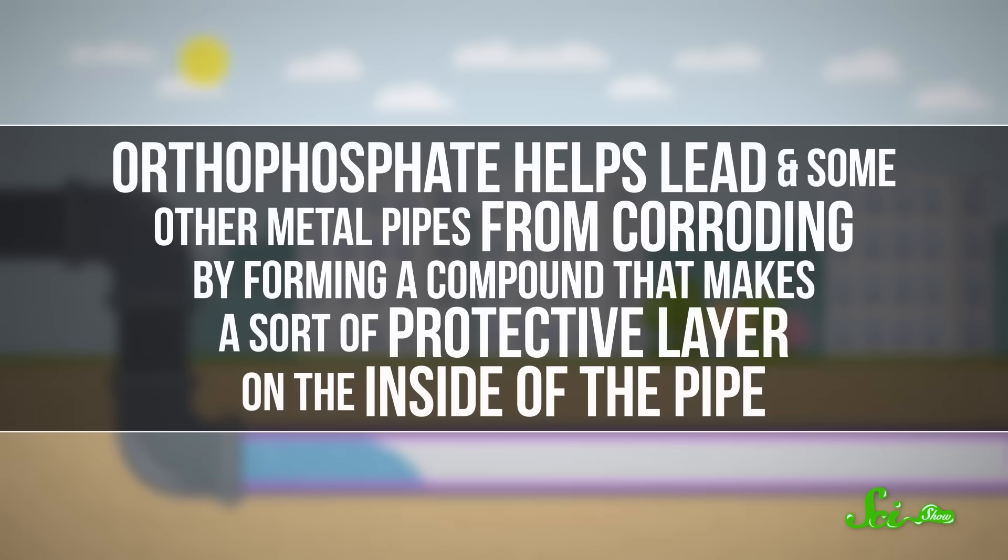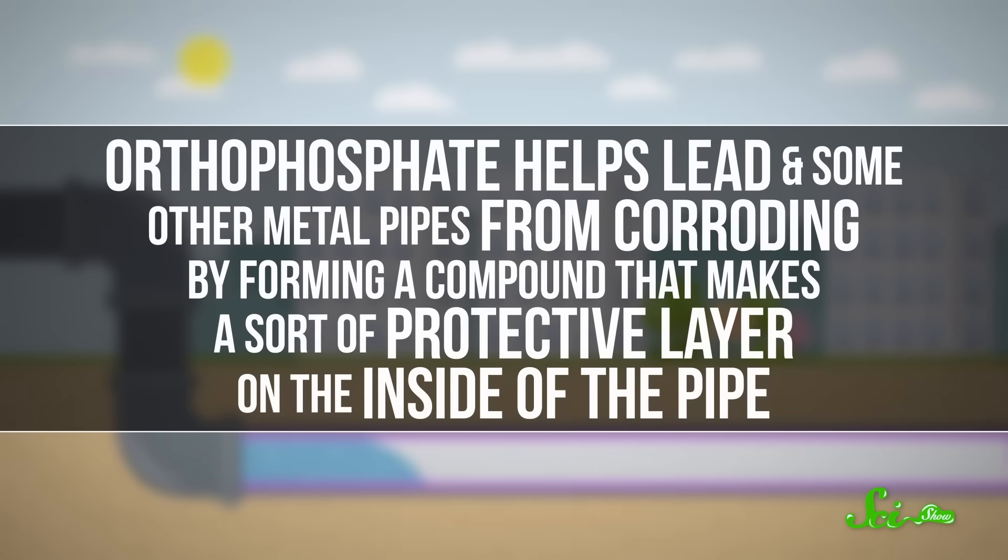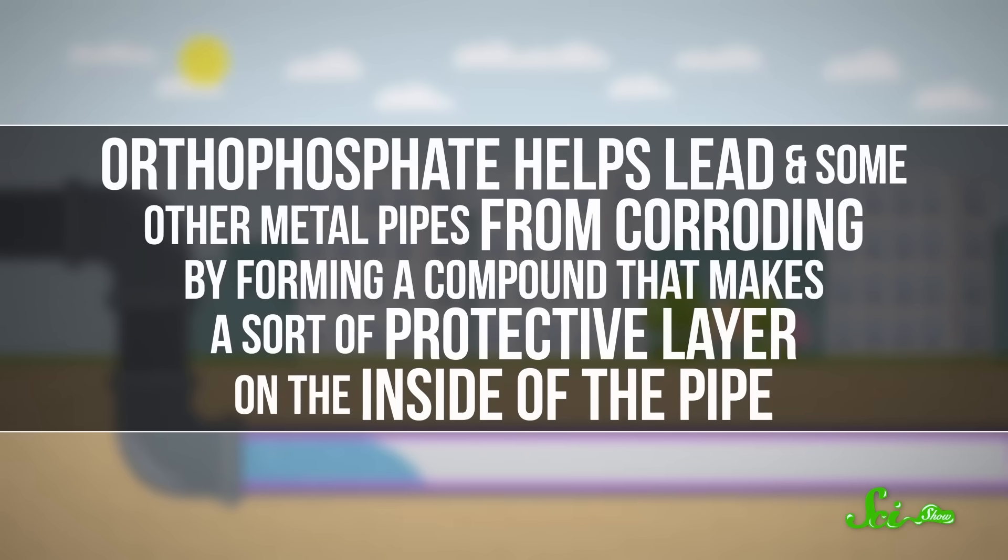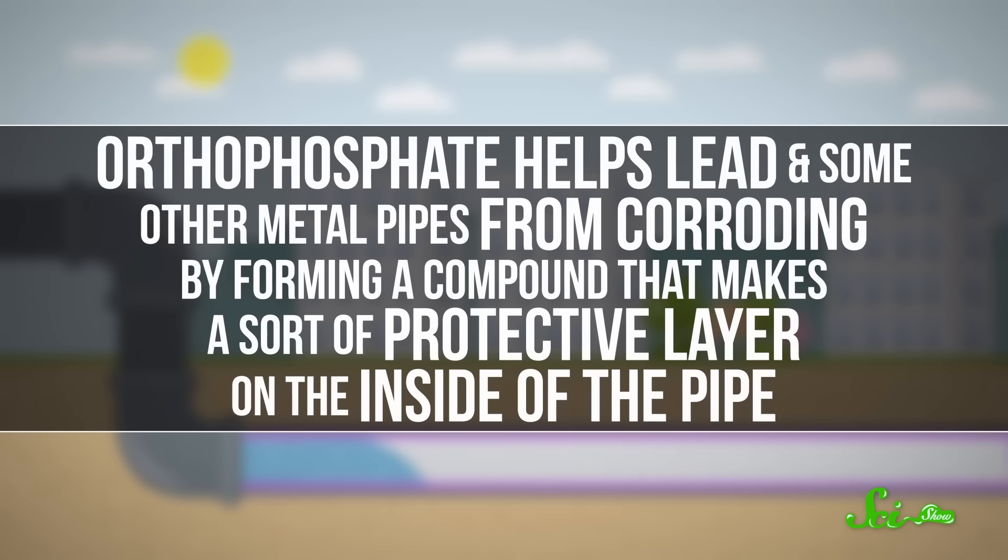A big part of the reason why is anti-corrosion chemicals in the water, like orthophosphate. Orthophosphate helps lead and some other metal pipes from corroding by forming a compound that makes a sort of protective layer on the inside of the pipe.